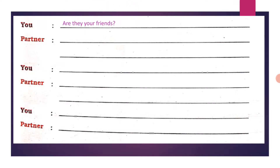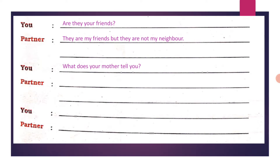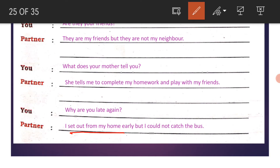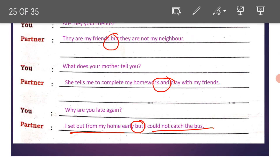You ask: 'Are they your friends?' Answer: 'They are my friends but they are not my neighbors.' You ask: 'What does your mother tell you?' Answer: 'She tells me to complete my homework and play with my friends.' You ask: 'Why are you late again?' Answer: 'I set out from my home early but I could not catch the bus.' Independent clauses joined by 'but' — compound sentence.